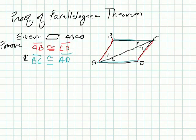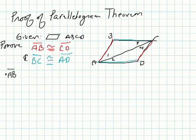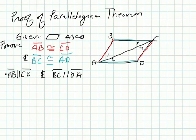Now let's take a look at how to prove that. We're given parallelogram ABCD, and we're trying to prove that these opposite sides are congruent to each other: that BC is congruent to AD, and that AB is congruent to CD. If you want to follow along on page 360, the first thing we know is AB is parallel to CD, and BC is parallel to DA — that's the definition of a parallelogram.